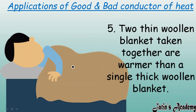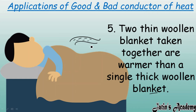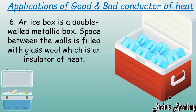The fifth application is that two thin blankets are warmer than one single thick woolen blanket. When we take two thin blankets, air gets trapped between them. Air, being a bad conductor of heat, does not allow our body heat to go outside, which is why we feel warmer with two thin blankets together.